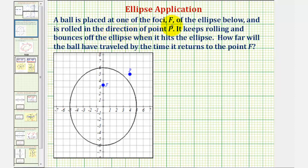A ball is placed at one of the foci F of the ellipse below, that would be this point here, and is rolled in the direction of point P, so the ball is rolled in this direction. It keeps rolling and bounces off the ellipse when it hits the ellipse. How far will the ball have traveled by the time it returns to point F, this focus?